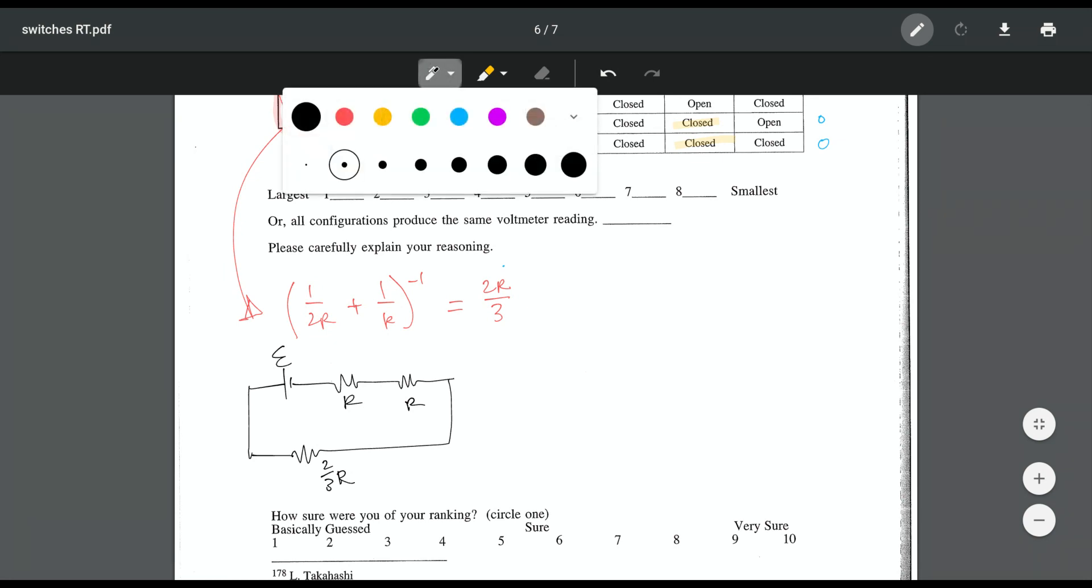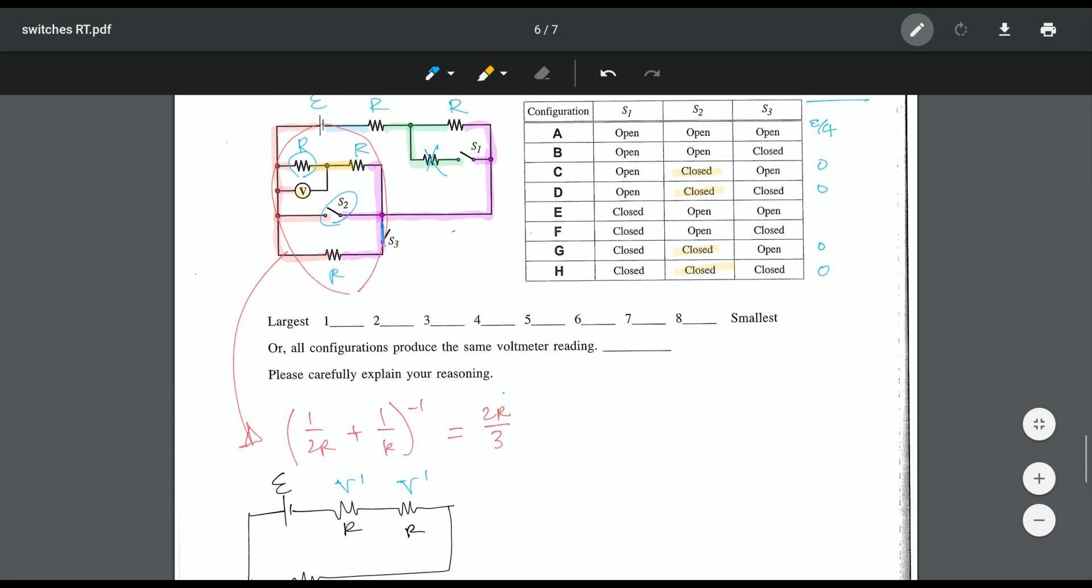So now if I'm going to go through and think about what the different drops are here, I'm interested in the drop over resistor R. Let's call that just like V prime or something. This is going to be V prime, and that means the drop over this network down here is going to be 2 thirds V prime.